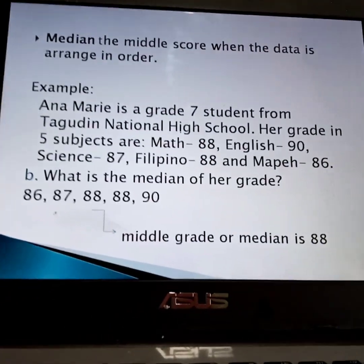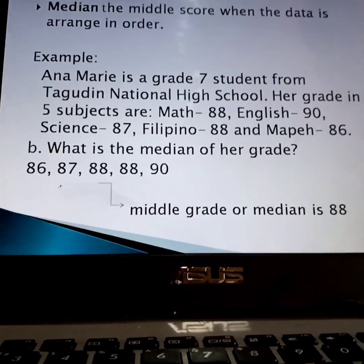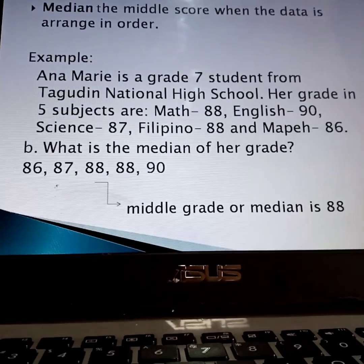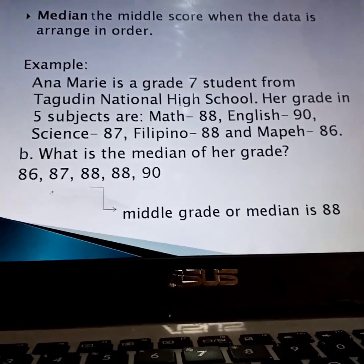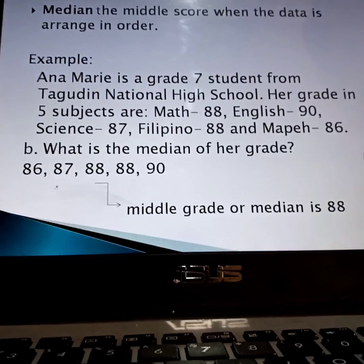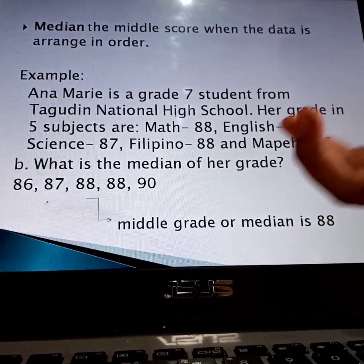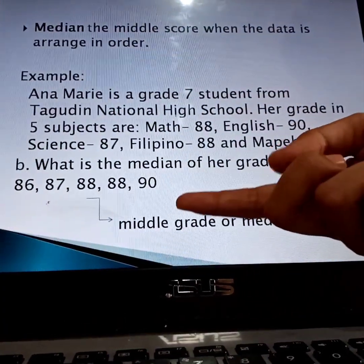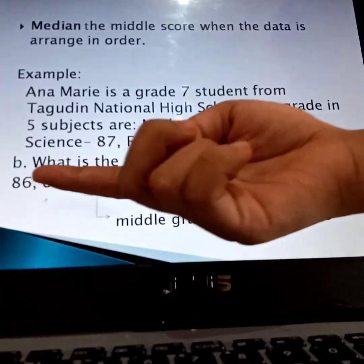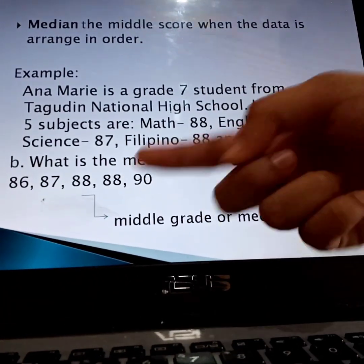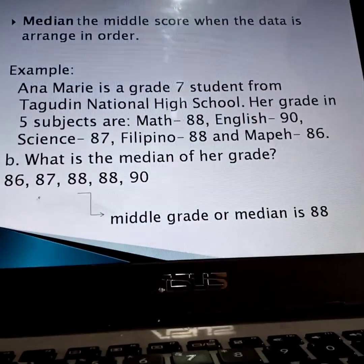Next, the median — the middle score when the data is arranged in order. So how do we get that? We arrange it in order from lowest to highest. Since the lowest is 86 and 90 is the highest, the middle is 88.